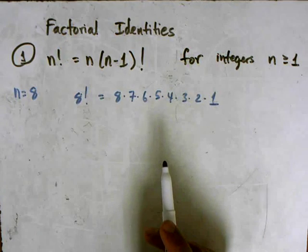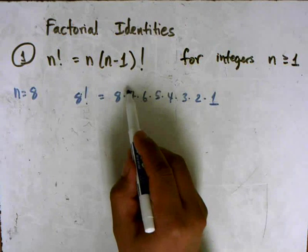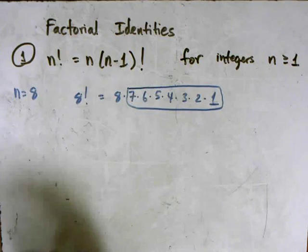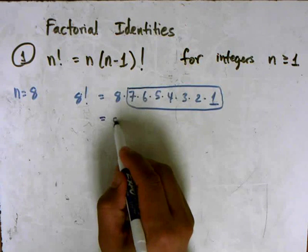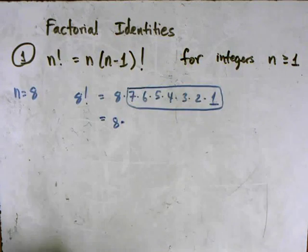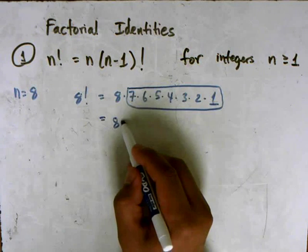But another way that we can look at this is by regrouping it this way. So now you have 8 times, and this group here that I've just drawn a box around, is really 7 factorial.